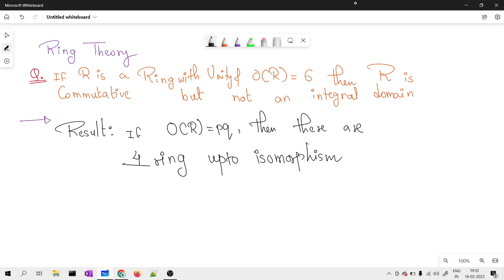There are four rings up to isomorphism. Those four rings look like Z_pq, and there are other three rings as well, where these rings are defined with external direct product. Since we are not so much into the external direct product of rings, I am not touching those parts, but there are other three rings as well.